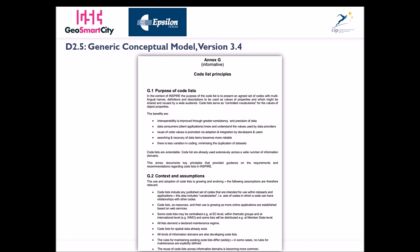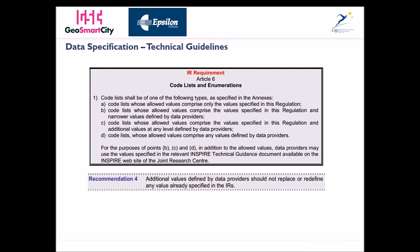The generic conceptual model also states the purpose of codelists and other contexts and assumptions in Annex G. The data specification provides guidelines for implementing what is laid down in the implementing rules and helps with recommendations. For example, regarding point 1 of Article 6, a recommendation is made that additional values defined by data providers should not replace or redefine any value already specified in the implementing rules.